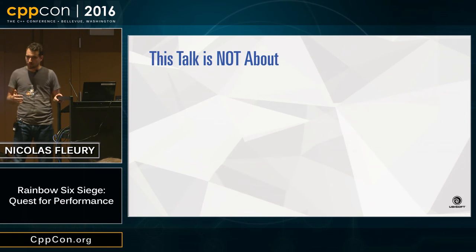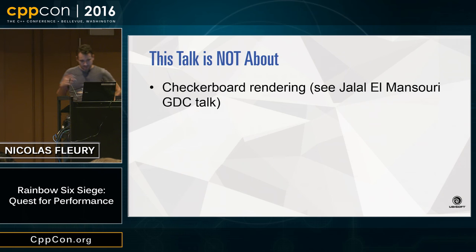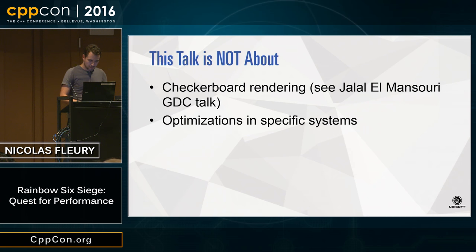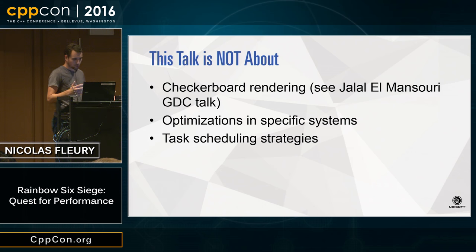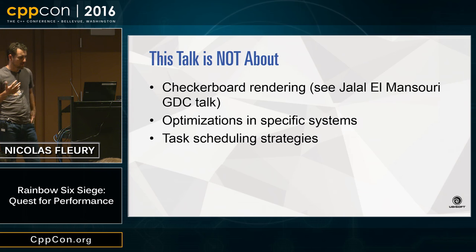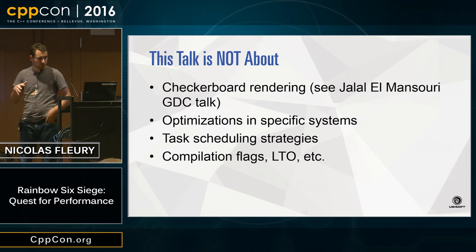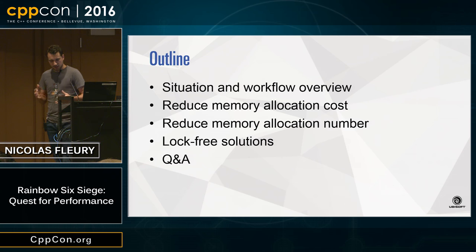There are a lot of things we did to ship a 60 FPS game that were extremely important, but I won't cover them all. I won't talk about our checkerboard rendering technique — you can see my friend Jalal's GDC talk instead — where we completely render only half the pixels in a frame in a checkerboard pattern. I won't cover task scheduling strategies — in a 60 FPS game not everything must be updated at 60 FPS; you could update some systems at 30, 20, 15, even 2 FPS. I also won't discuss compilation flags and link time optimization.